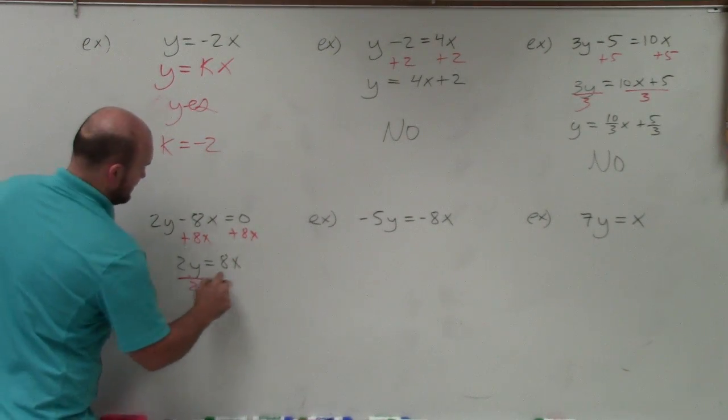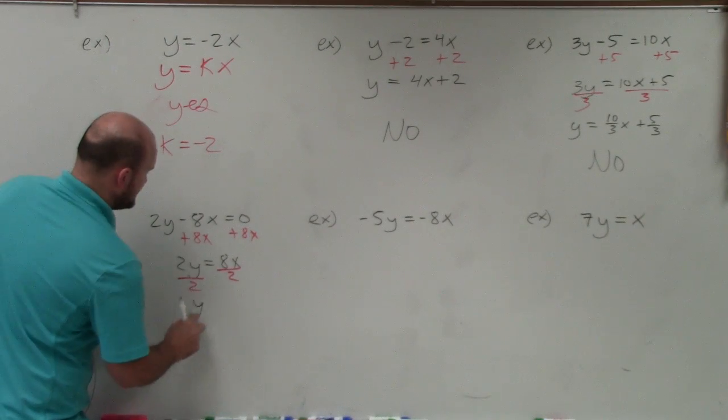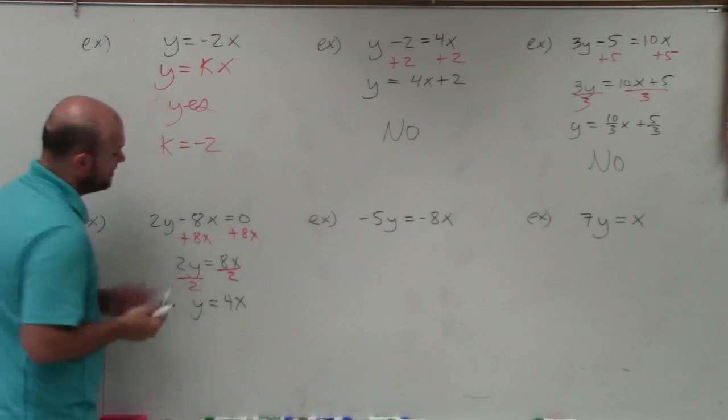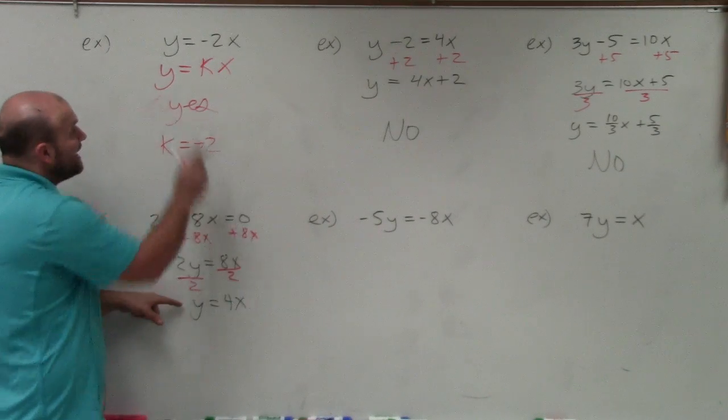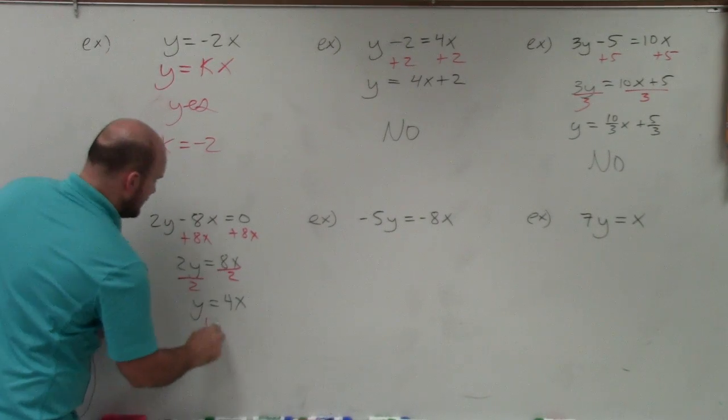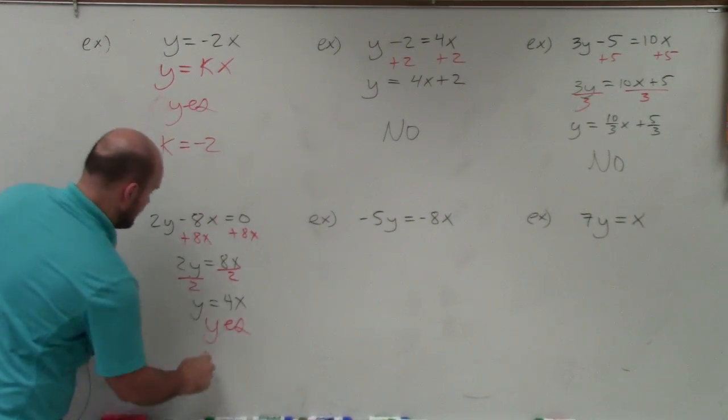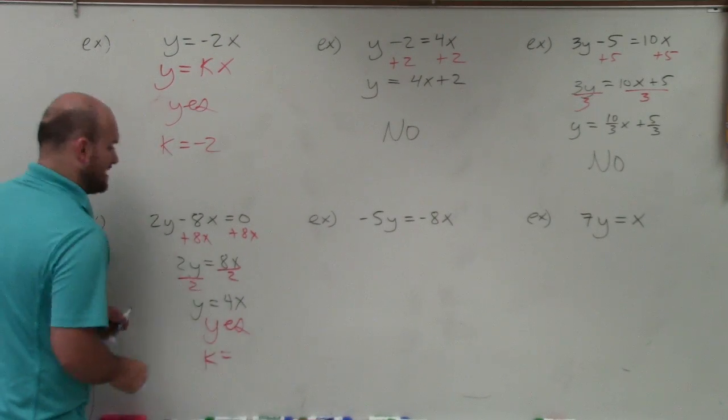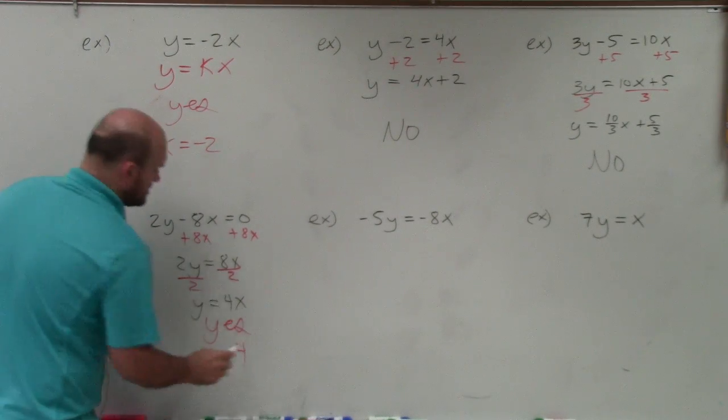Now, to solve for y, I divide by 2. And what I obtain is y equals 4x. So guess what? By solving for y, I've now put it into that form. So yes, it is in that form. It is an example of direct variation, where k equals 4.